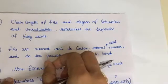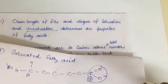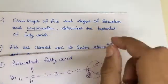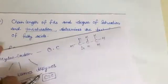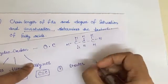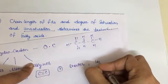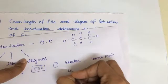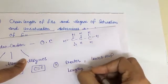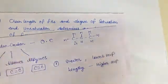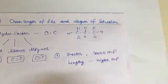Regarding properties: chain length and degree of saturation affect melting point. More saturation means a higher melting point. If the chain of the fatty acid is shorter, it will have a lower melting point. If the chain is longer, it will have a higher melting point because more energy is needed to break the bonding.